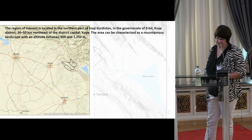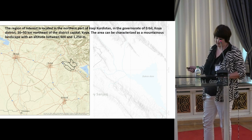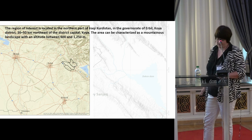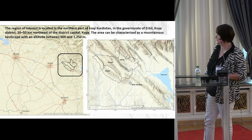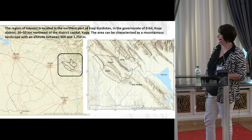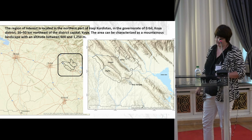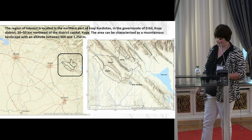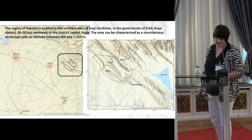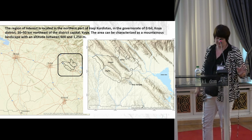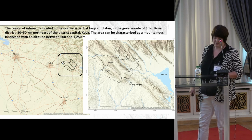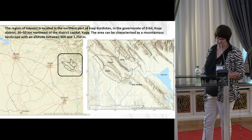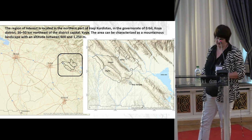Our region is located in the northern part of Iraqi Kurdistan, in the governorate of Erbil, 20 to 50 kilometers northeast from the district capital of Koya. The area can be characterized as a mountainous landscape with altitudes between 600 to 1300 meters. It's a region of three sub-districts: Degala, Sigtan, and Tsvakhuli. The region is relatively remote and not very densely populated, but it has been subject to minimal historical or archaeological mapping activity in the past.